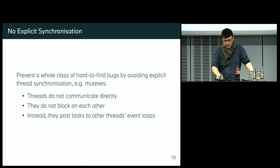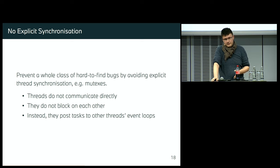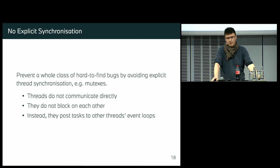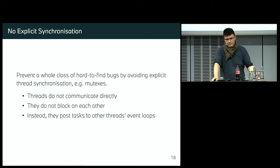What this means in practice is that we don't need any explicit thread synchronization, because posting a task itself is a thread-safe operation ensured by the framework. Client code doesn't need any mutexes. It has APIs to post a task, that's thread-safe, and that's it. There are no mutexes in client code. Of course, there are mutexes inside the framework to implement everything, but all the applications don't need any. No synchronization is required. This prevents a whole bunch of problems associated with threads and synchronization — no deadlocks, no race conditions.